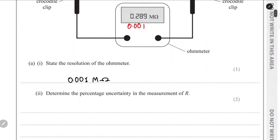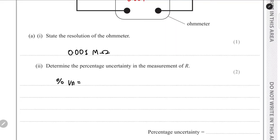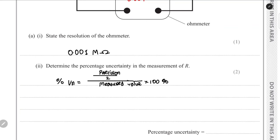Now we have to find the percentage uncertainty in this measurement. The percentage uncertainty equals the precision divided by 2, divided by the measured value, multiplied by 100. The measurement uncertainty is half the resolution or precision of the instrument for single readings.